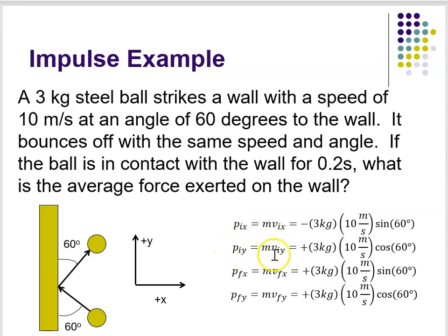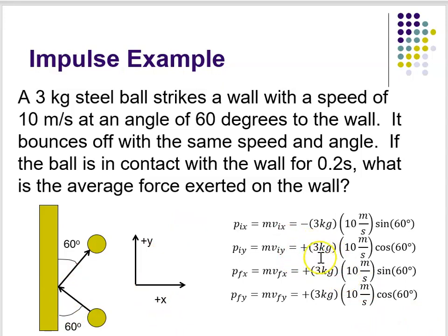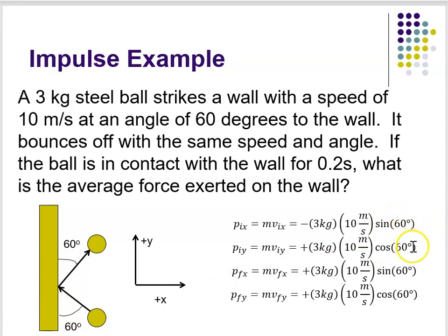Similarly, for my y component, I have mass times initial velocity in y. My initial velocity in the y direction points up — that's plus y — so I have a positive sign. That's three kilograms times 10 meters per second, my speed. For the y component I'm going to use the cosine of 60, because if I use the sine of 60 for the x component, I use the cosine of 60 for the y. So that gives me the initial components of my momentum in both the x and the y.